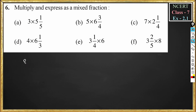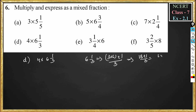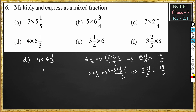Problem d: 4 into 6¹/₃. We convert 6¹/₃ into an improper fraction: 3 into 6 plus 1, divided by 3, which becomes 18 + 1 by 3, equal to 19/3. Alternatively, 6 + 1/3 with LCM 3 gives (6 × 3 + 1) / 3, the 3s cancel, giving 18 + 1 by 3, also equal to 19/3.